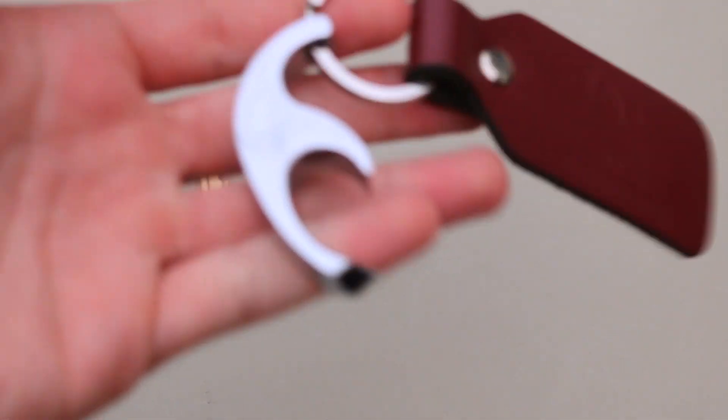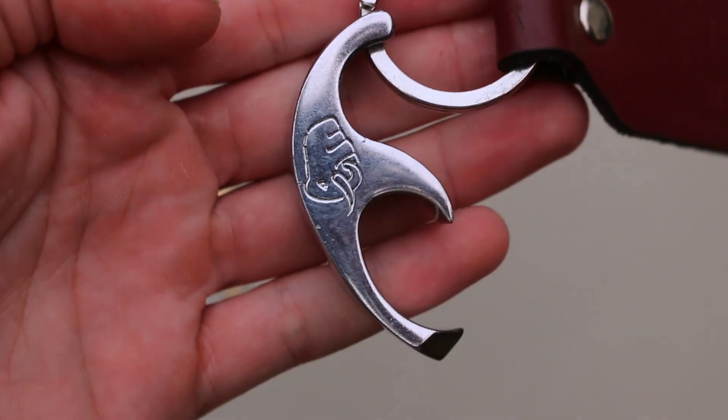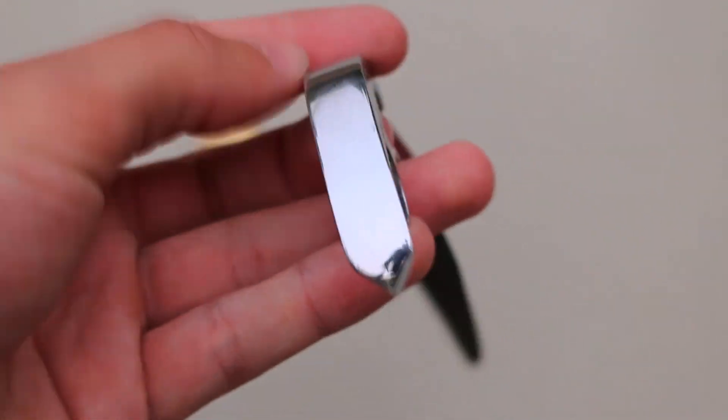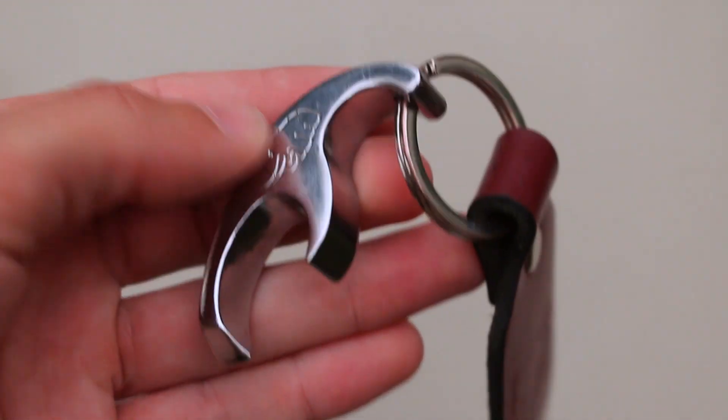Right here we have the Magnum Saber Tooth by Raging Mammoth. This guy is made out of stainless steel with a polished finish. It's really nice, I've been using it for a while now.